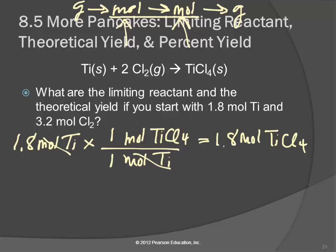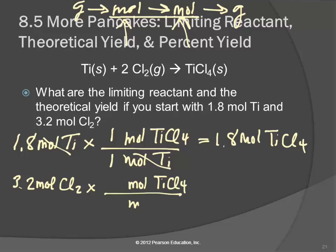Then we figure out what if we use up all the chlorine. 3.2 moles of chlorine — we're still trying to find moles of TiCl4, so we multiply by moles of TiCl4 and divide by moles of Cl2. There's still a 1 in front of TiCl4, and a 2 in front of Cl2. So 3.2 divided by 2 gives us 1.6 moles of TiCl4.